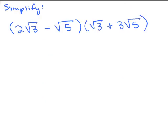Let's simplify this next one: 2 square root of 3 minus square root of 5, times square root of 3 plus 3 square root of 5. We're going to do the FOIL method because there's a binomial times a binomial.